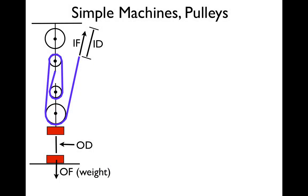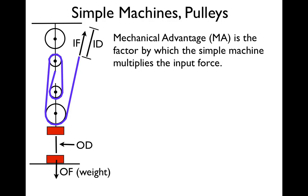Now let's go over what the mechanical advantage is. The mechanical advantage has a kind of technical-sounding definition, but I think the best one is: it's the factor by which the simple machine multiplies the input force. With simple machines, we want to put less force in and get more force out — that's why we use a simple machine. If we want to raise something that's 100 newtons, we don't want to have to use 100 newtons of force. It's the factor by which the simple machine multiplies the input force to give us the output force.